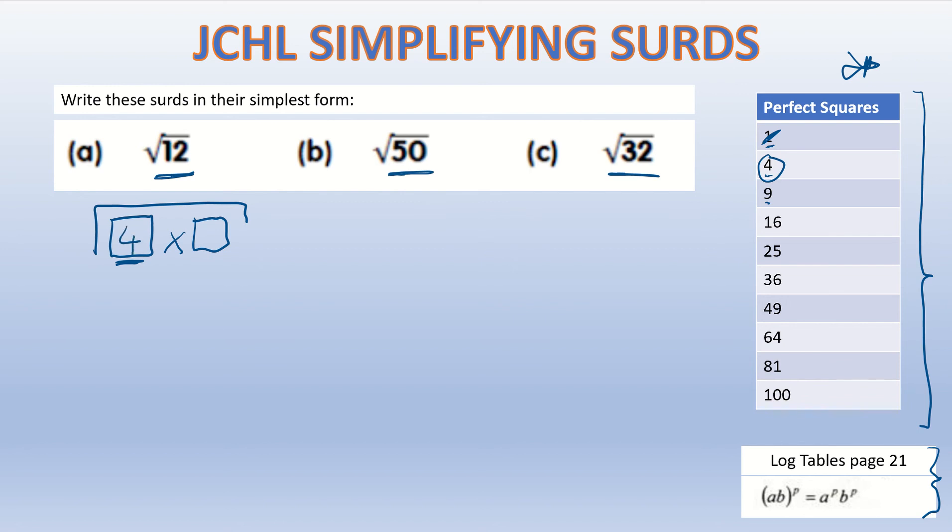I'm going to say 4 and I'm going to ask myself, well 4 times what will give me 12? And of course the answer is 3. So we've said that the root of 12 is the same thing as the root of 4 times 3. Now if you remember back to your laws of indices, the square root of something is the same thing as saying 4 times 3 to the power of a half.